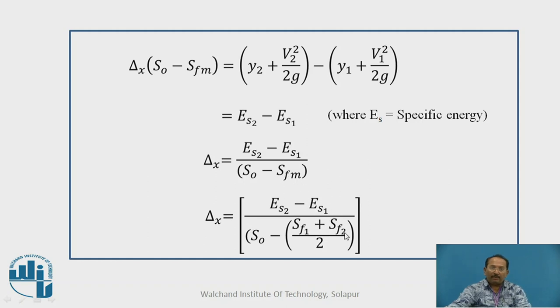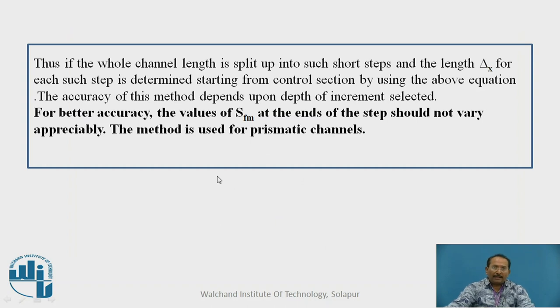Sfm is Sf1 plus Sf2 upon 2. Thus, if the whole channel is split into such short steps, because it is a huge length, you can split it into short steps and the length delta x for each step is determined starting from the control section by using the above equation. The accuracy of this method depends upon the depth of the increment selected. And for better accuracy, the values of Sfm at the end of the step should not vary appreciably.